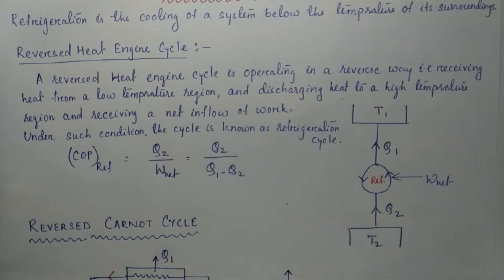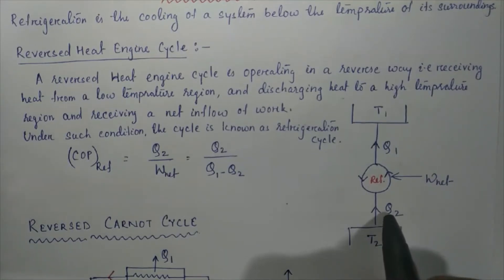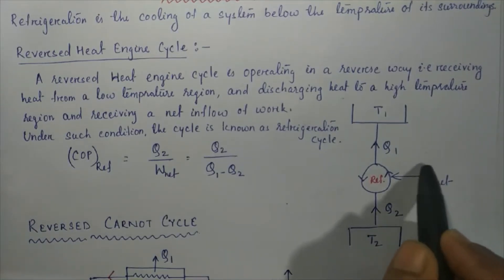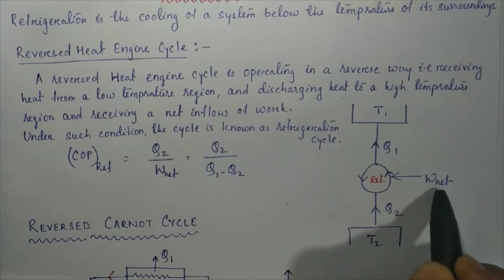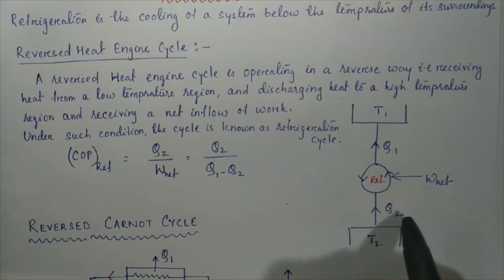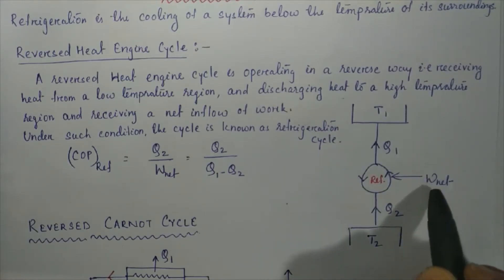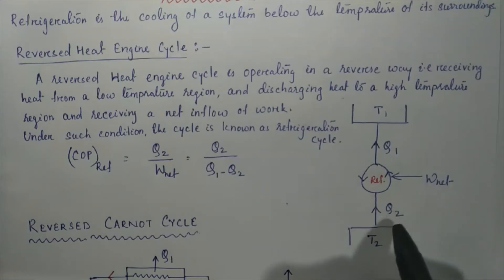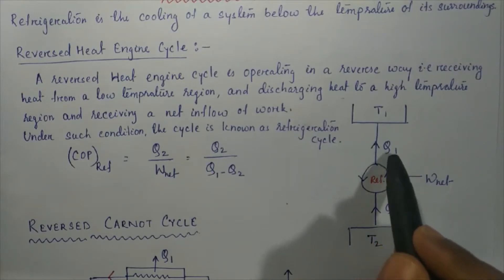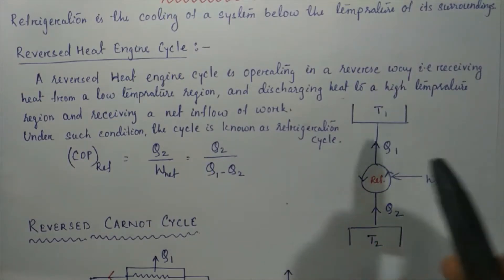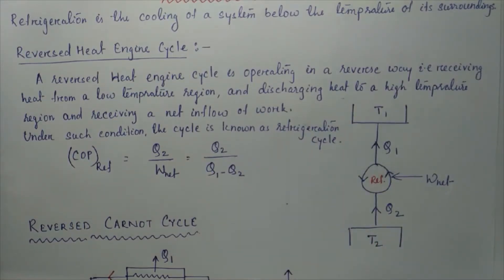For Q2 to flow, we need some extra energy W_net supplied to the whole system. When W_net and Q2 combine together, that becomes Q1, and in the form of Q1 that energy flows to the surroundings. This is the working of a reverse heat engine cycle.